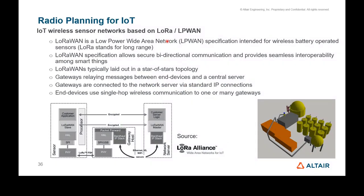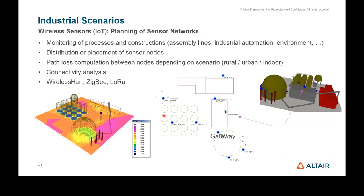For industrial IoT scenarios, protocols such as LoRa (long range, low power LAN) and Zigbee are supported. Multiple sensors in an industrial environment can be monitored using these protocols. WinProp can compute power distribution and use air interfaces to calculate data rates, helping ensure connectivity to sensors for reliable data collection.